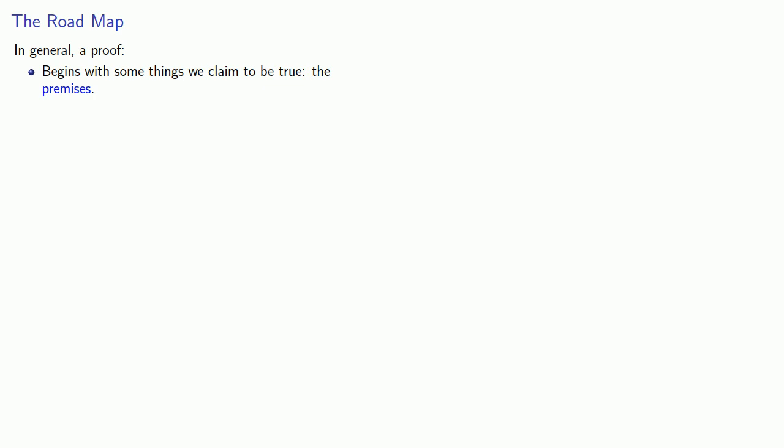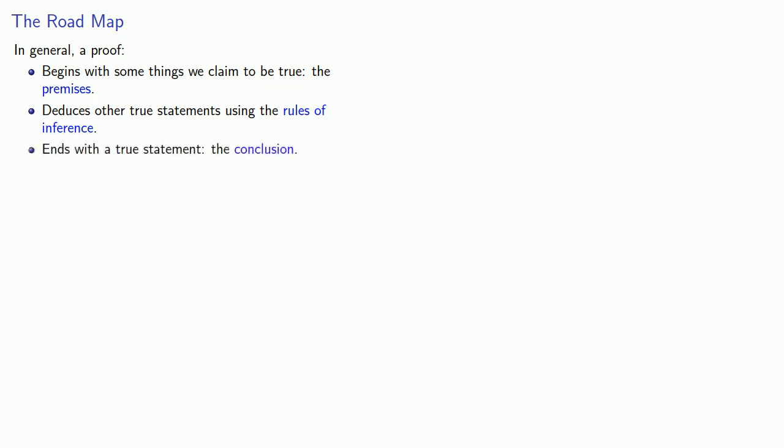In general, a proof begins with some things we claim to be true — the premises — deduces other true statements using the rules of inference, and ends with a true statement: the conclusion.